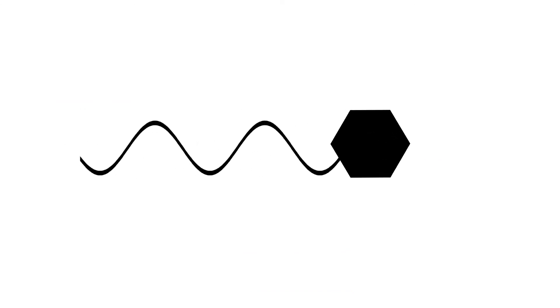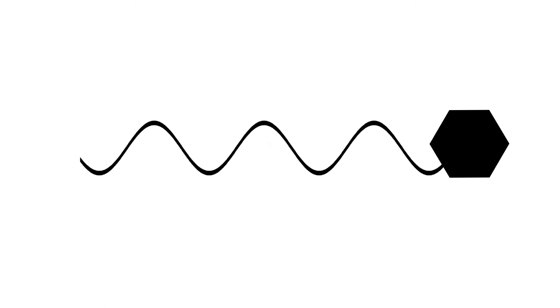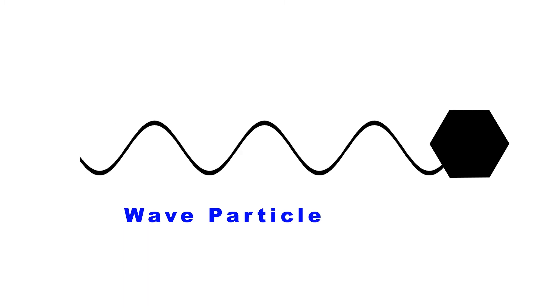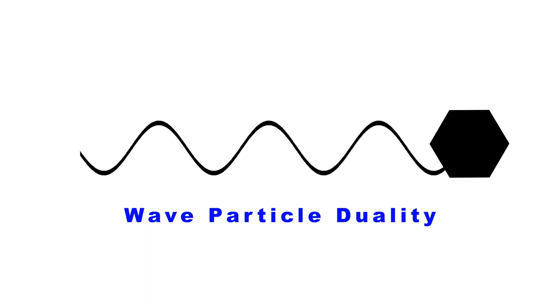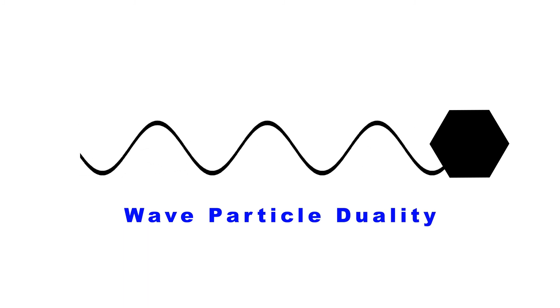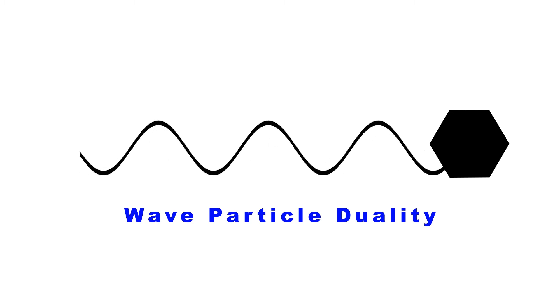In the previous video on quantum uncertainty, we learned that the reason for the existence of quantum uncertainty is the dual nature of a particle, which is called wave-particle duality. In the next video, we will learn about the wave-particle duality concept of de Broglie and interesting facts related to matter waves.